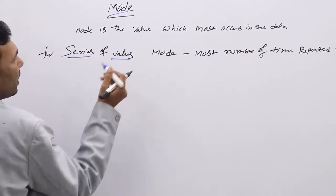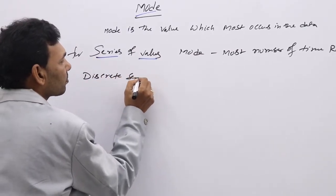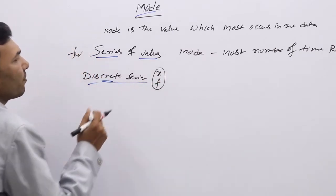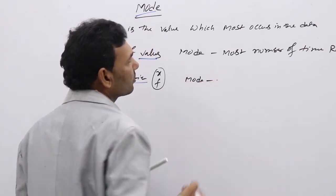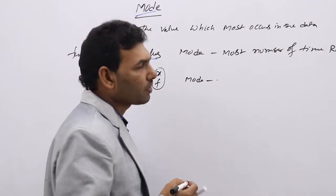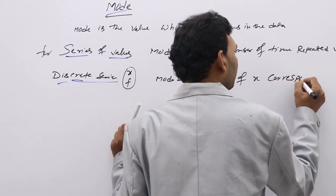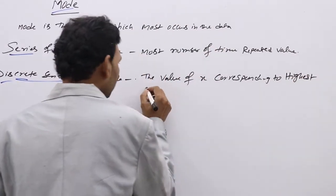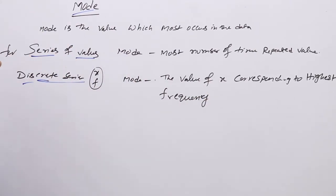For discrete data — when x and f values are given, x values and frequency are given — then mode is the value of x corresponding to the highest frequency. The x value corresponding to the highest frequency is called the mode.